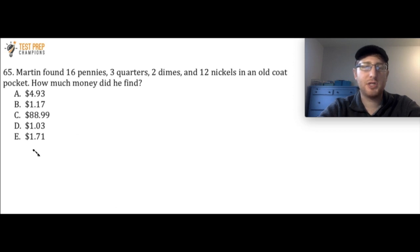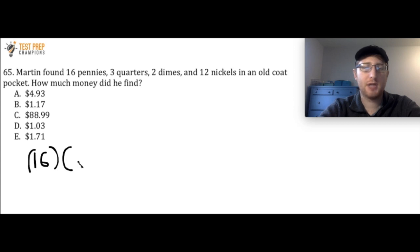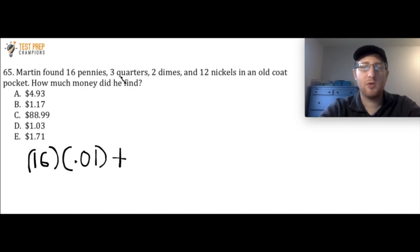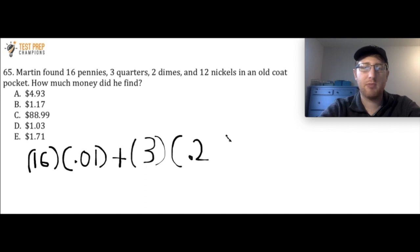Okay, so in this question the first thing to note is there are 16 pennies, and 1 penny is worth 1 cent, which we write as .01. So if I do 16 times .01, that tells me the value of the pennies, and I want to add that to the quarters. We have 3 quarters, and 1 quarter is worth 25 cents, written as .25.